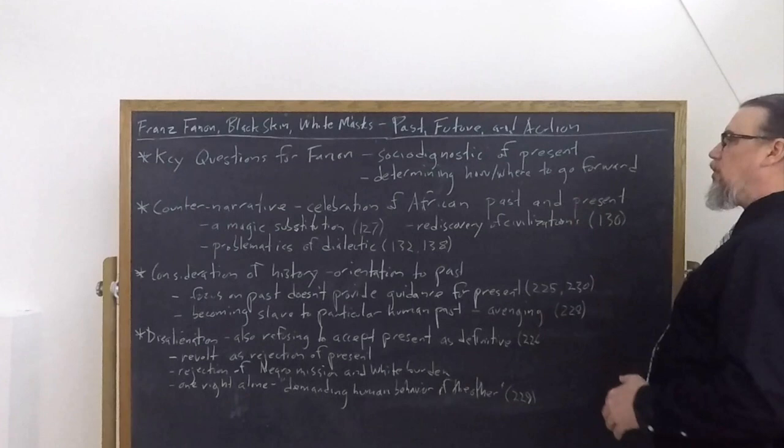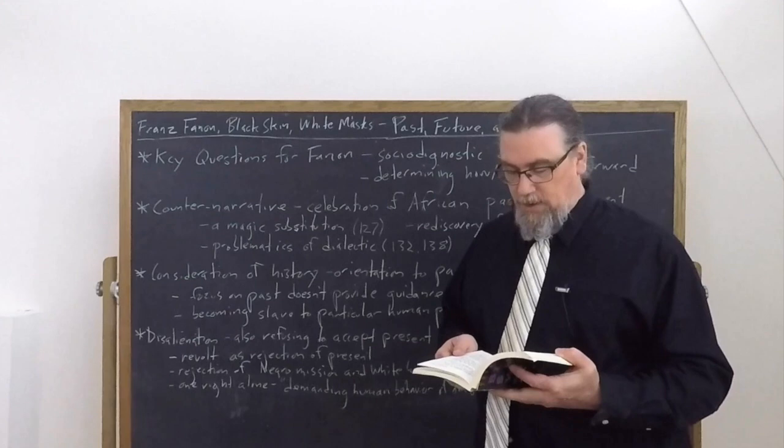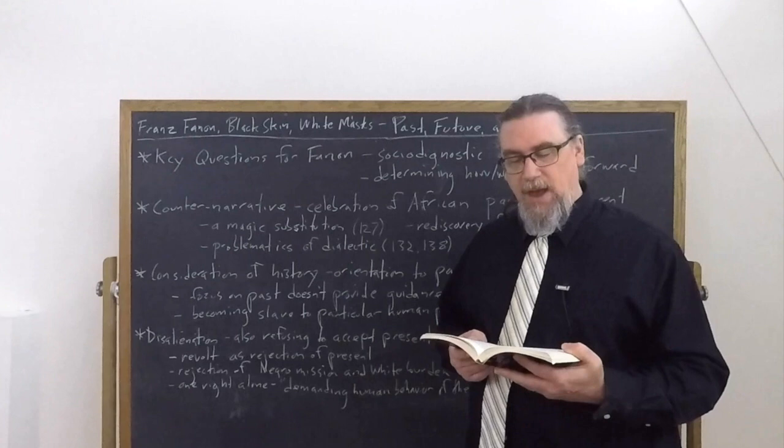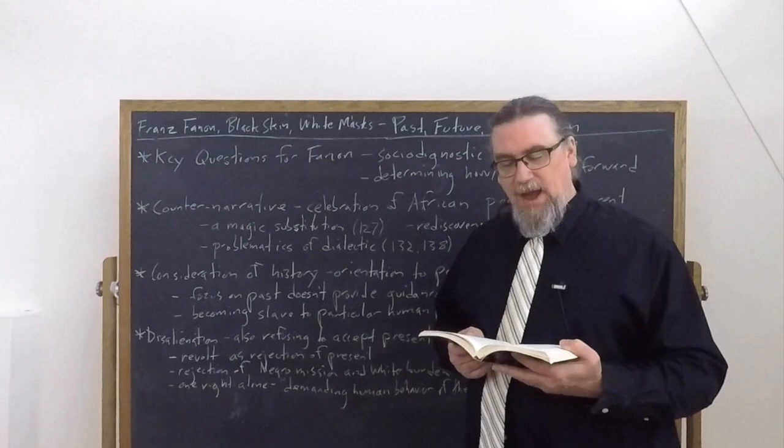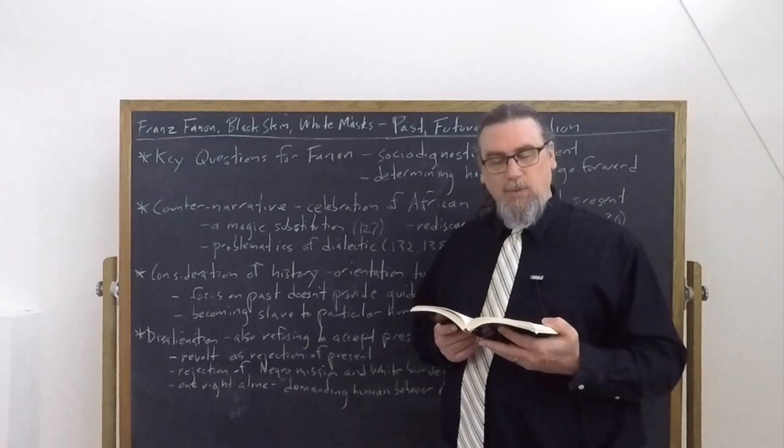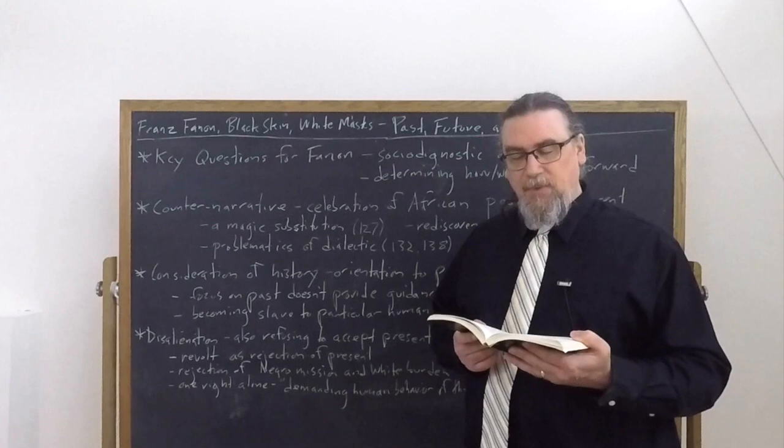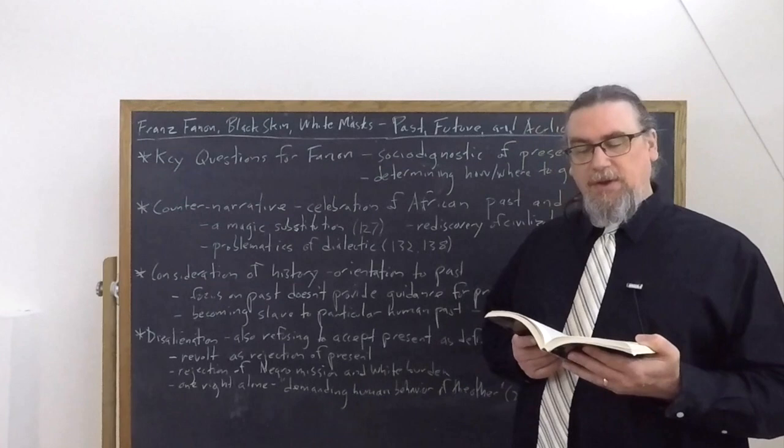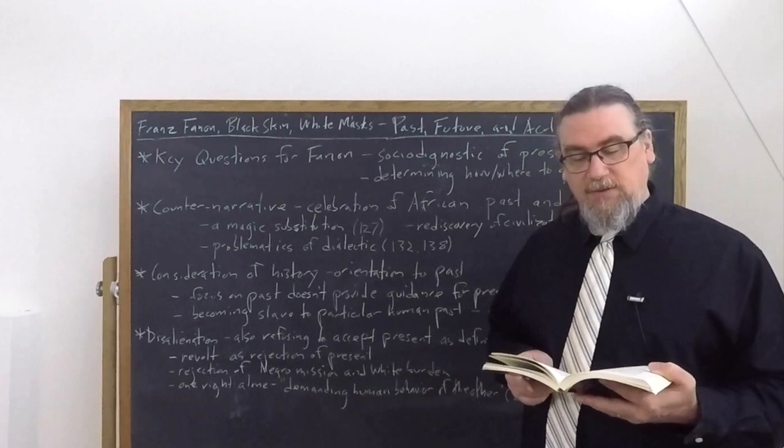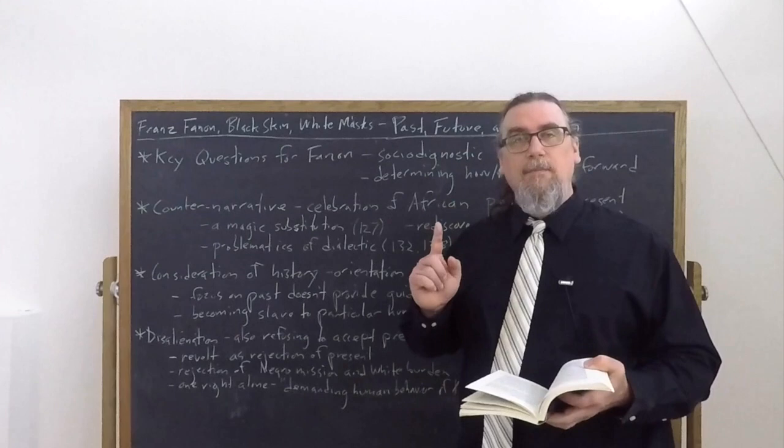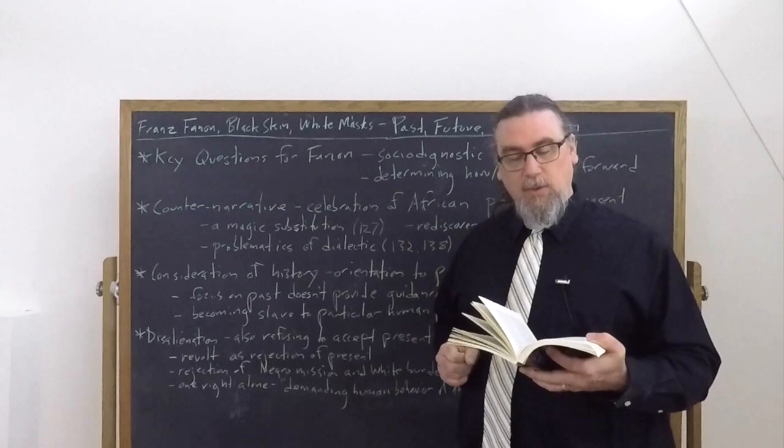The rediscovery of African civilizations is not going to particularly help as well. He says, I rummaged frantically through all the antiquity of the black man. What I found there took away my breath. In his book, L'abolition de l'esclavage, Schoelcher presented us with compelling arguments. Since then, Frobenius, Westermann, Delafosse, all of them white, had joined the chorus. Segou, Djenne, cities of more than 100,000 people, accounts of learned blacks, doctors of theology who went to Mecca to interpret the Koran. All of that, exhumed from the past, spread with its insides out, made it possible for me to find a valid historic place. The white man was wrong. I was not a primitive, not even a half man. I belong to a race that had already been working in gold and silver 2,000 years ago.